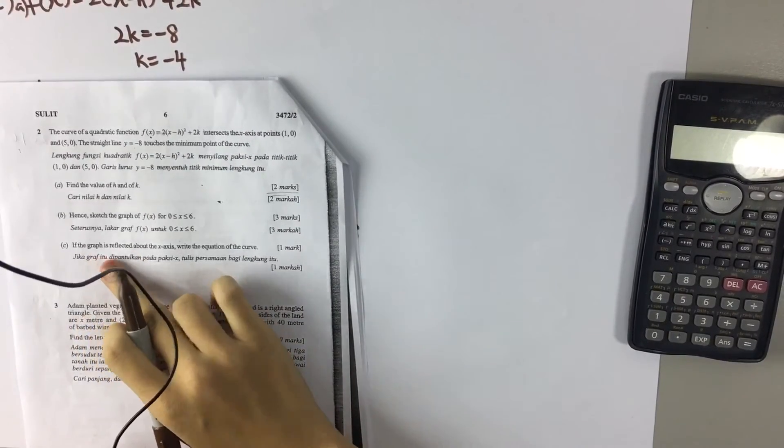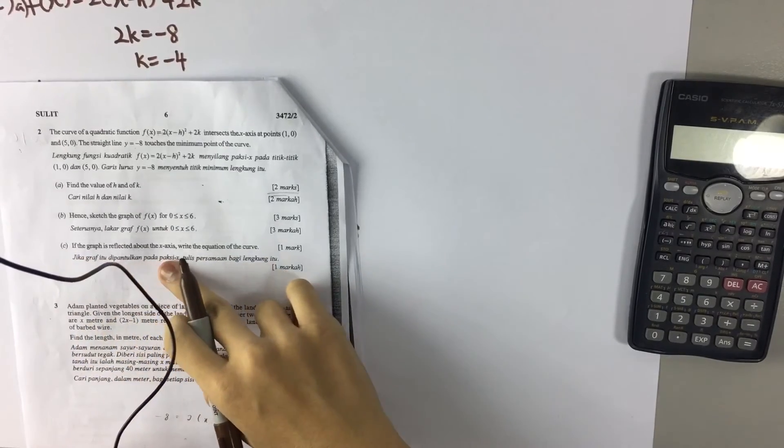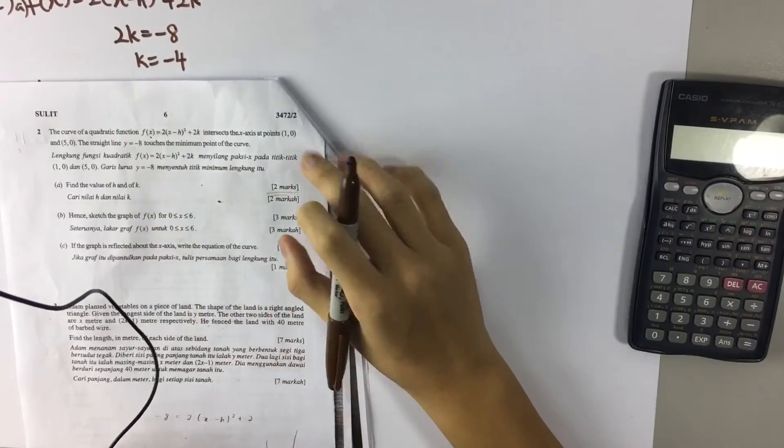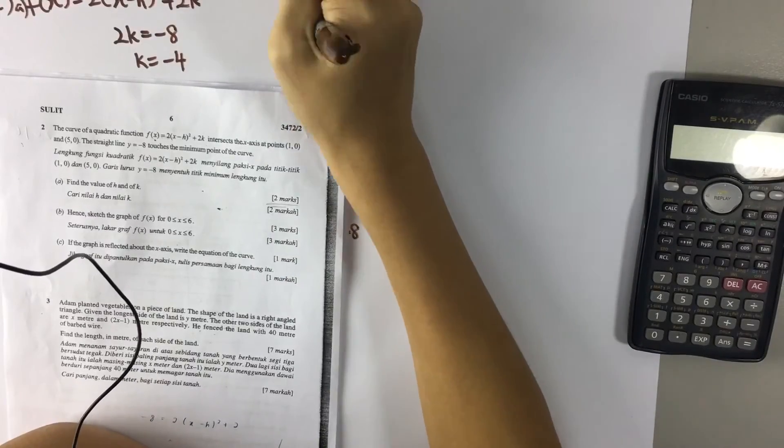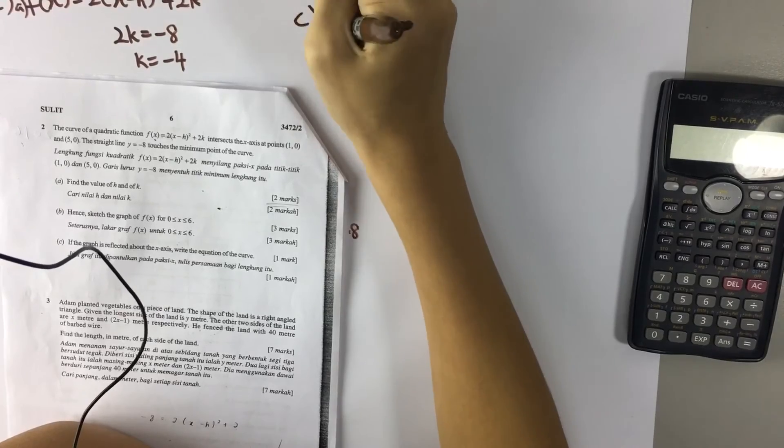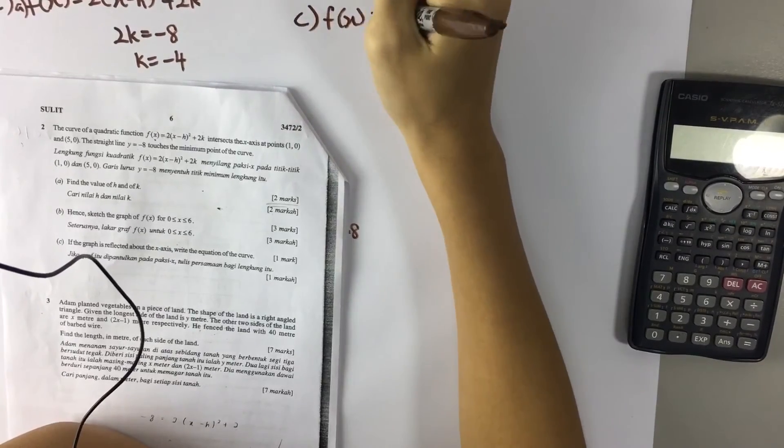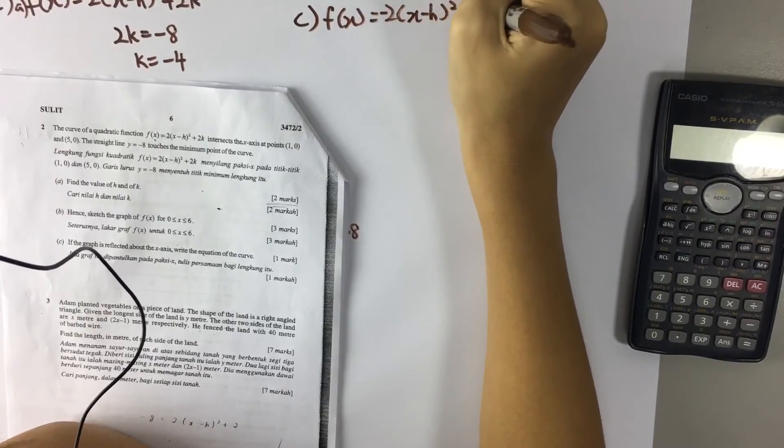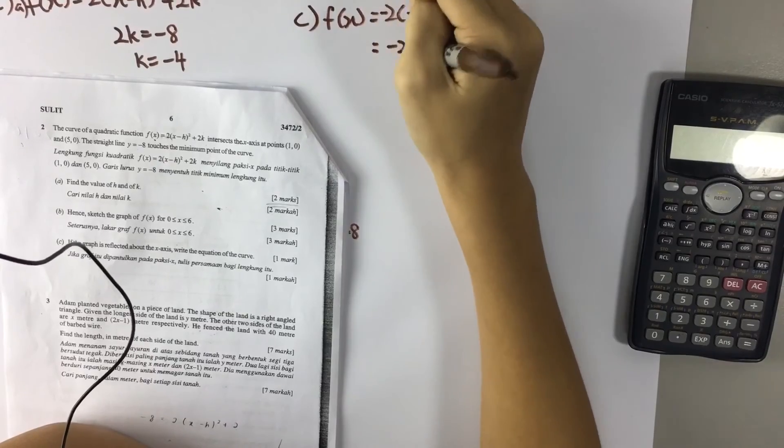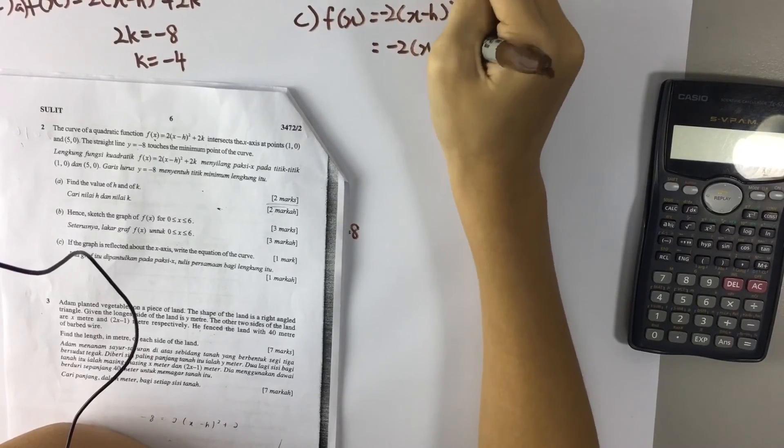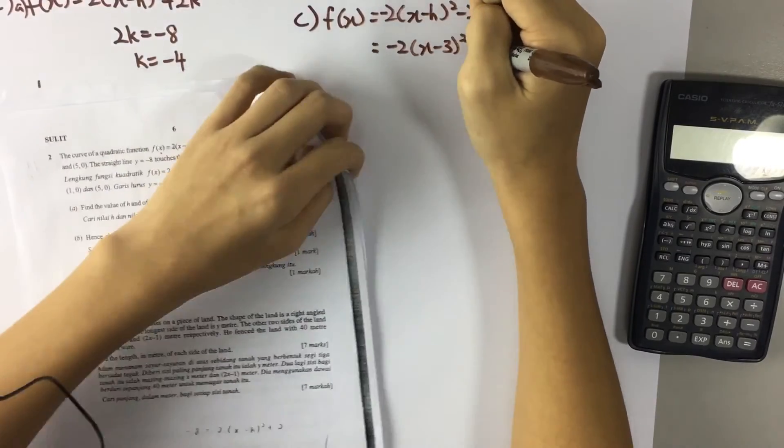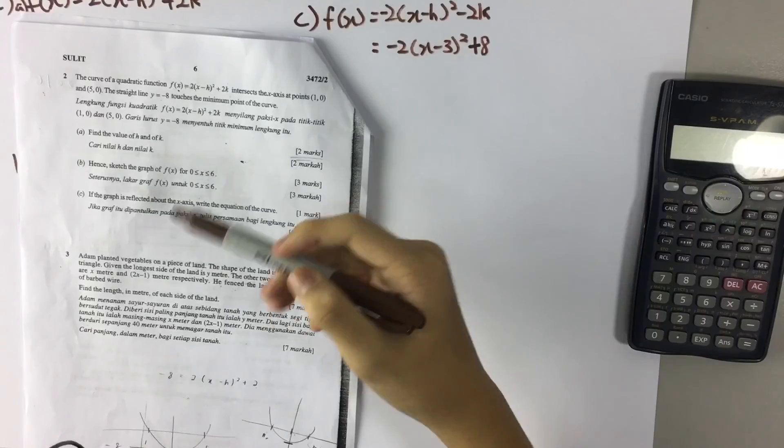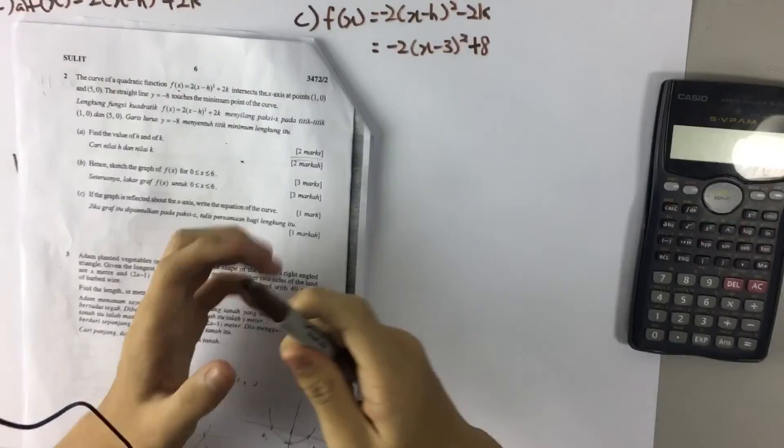Part C asks you to write the equation of the curve if the graph is reflected about the x-axis, which means the equation is totally reflected - positive negative, negative positive. So for part C, fx is equal to negative 2(x minus h)² minus 2k, which is also negative 2(x minus 3)² plus 8.